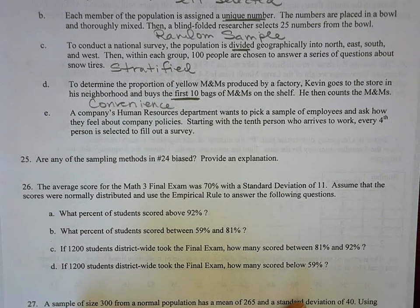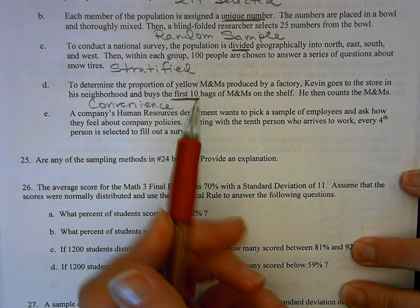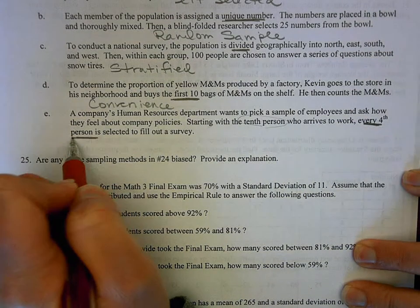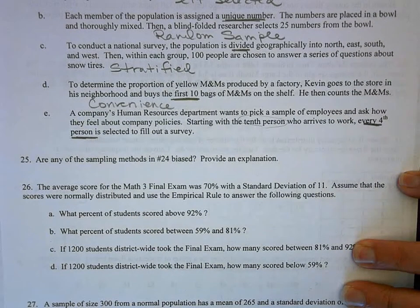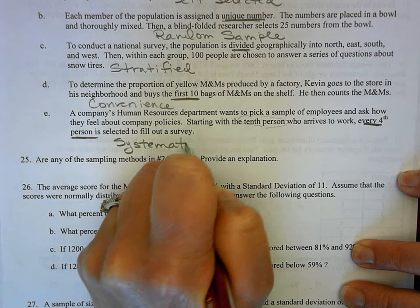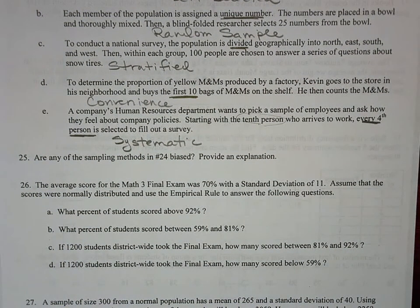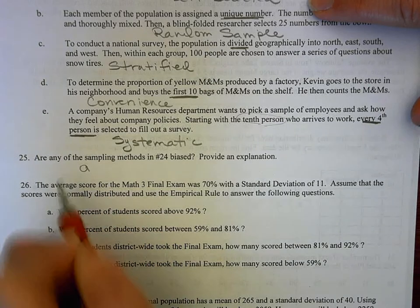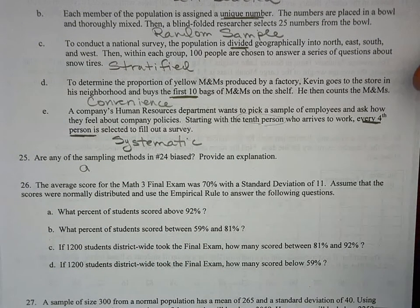For Part E, an HR department starts with the 10th person who arrives to work and then asks every 4th person after that. Every 4th person is a systematic pattern, so this is systematic sampling. As for bias in question 24: random sample is the most unbiased. Self-selected has definite bias because people who volunteer to answer have strong opinions.